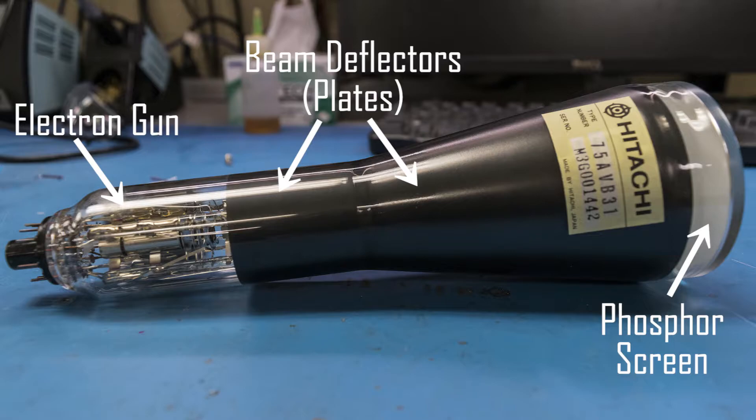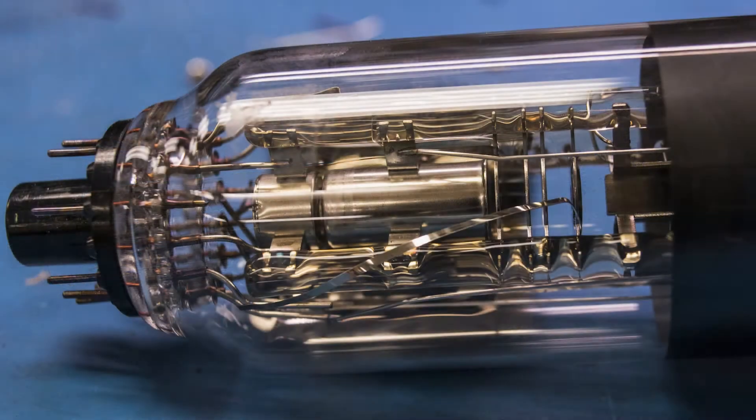So in short, a cathode ray tube functions by accelerating electrons and slamming them into a beta-reactive phosphor that produces light. These electrons are sent on specific paths using either electrostatic or electromagnetic deflection. The electrons begin this high-speed roller coaster ride over here at the electron gun. An electron gun does exactly what it sounds like it does. It produces high-speed electrons.